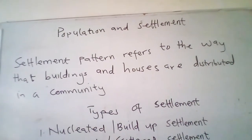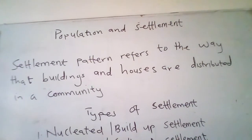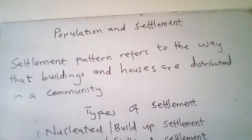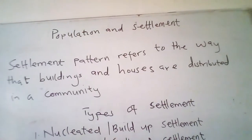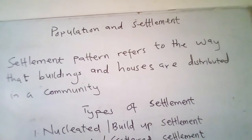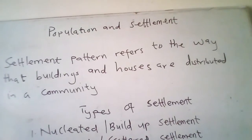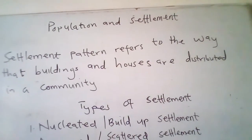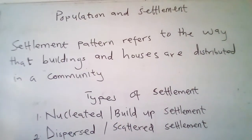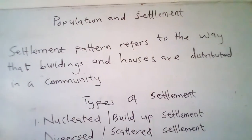In other places, the houses are arranged in line form. This pattern is common in towns and cities where the estate buildings are arranged in a line form. Examples include Tema, Accra, and Senate Flats in Sunyani.